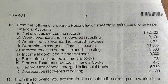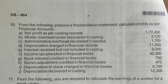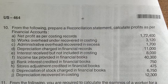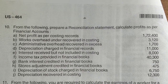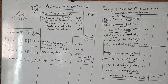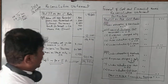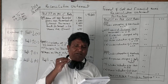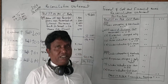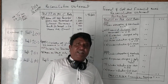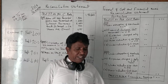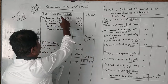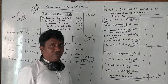This is a 2017 question paper, 14 marks. From the following, prepare a reconciliation statement to calculate profit as per financial accounts. The first point: net profit as per cost records, that is net profit as per costing books, is one lakh seventy-two thousand four hundred.